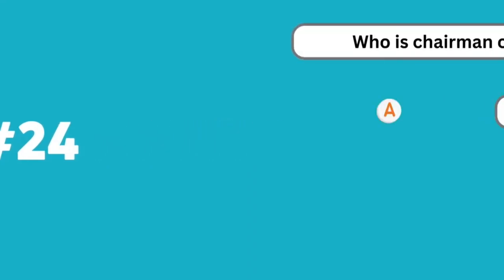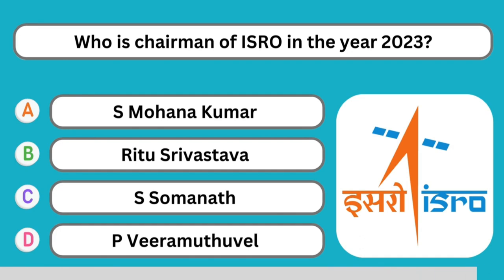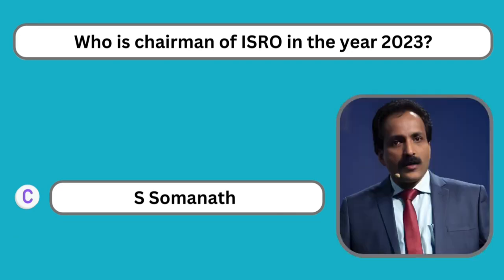Question number twenty-four: Who is the chairman of ISRO in the year 2023? The correct answer is S. Somnath. S. Somnath is the chairman of ISRO in 2023.